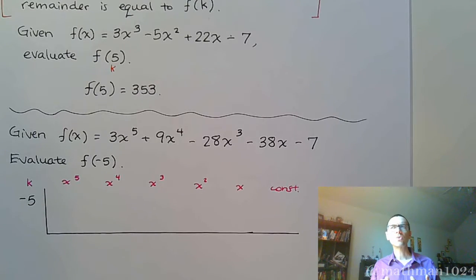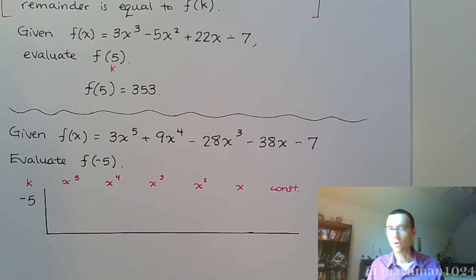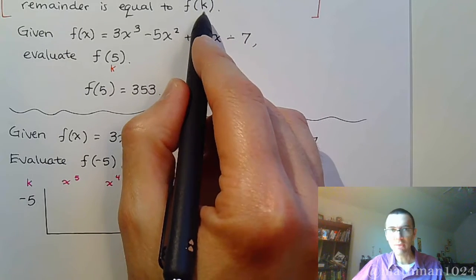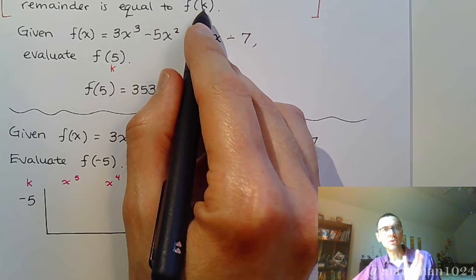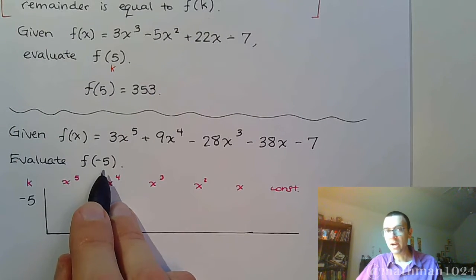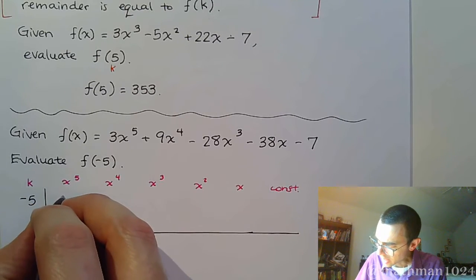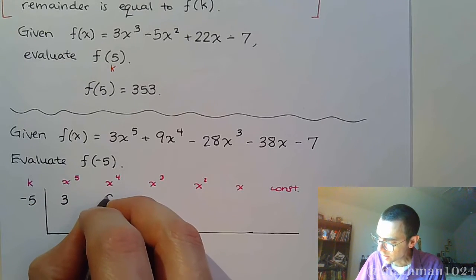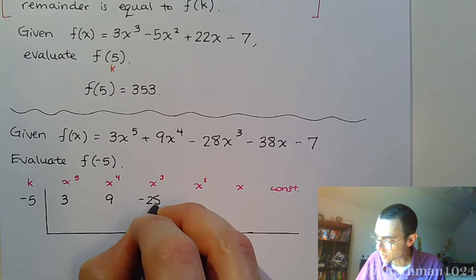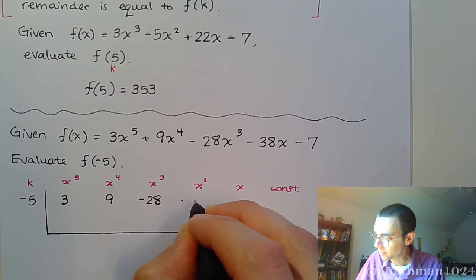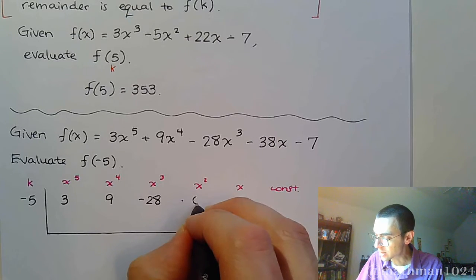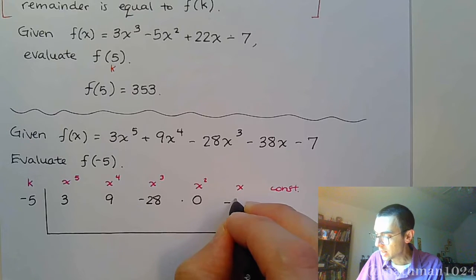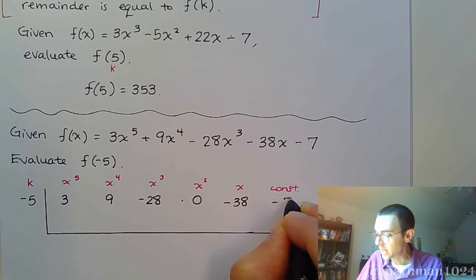We go all the way up to x to the 5th power, so let's make sure we don't skip anything. My k value is negative 5 — exactly as you see it. The remainder theorem says f of k, so there's no switching of signs. We have: 3 for x to the 5th, 9 for x to the 4th, negative 28 for x to the 3rd, 0 for x squared (since there's no x squared term), negative 38 for x, and negative 7. Missing one sign will blow the whole thing up.